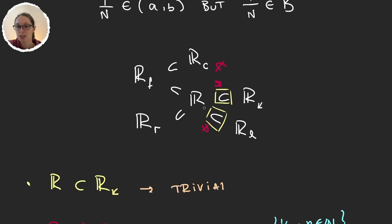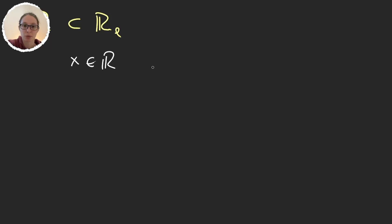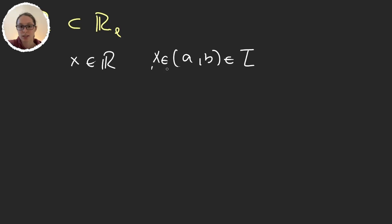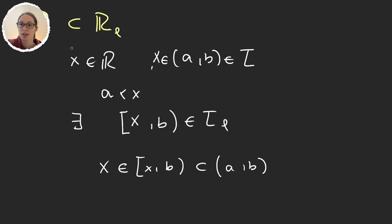Now let's prove that the standard topology is a subset of the lower limit topology. For x ∈ (A, B), a basis element in the standard topology, we have A < x, so the half-open interval [x, B) is a basis element in the lower limit topology. It contains x and is obviously a subset of (A, B). So we have what we wanted to prove.